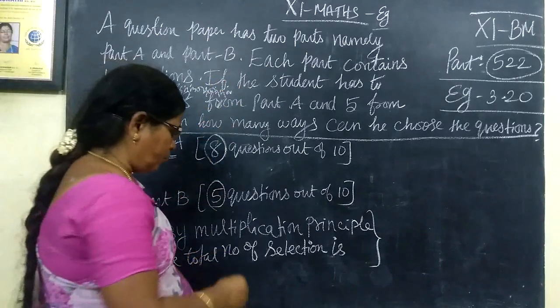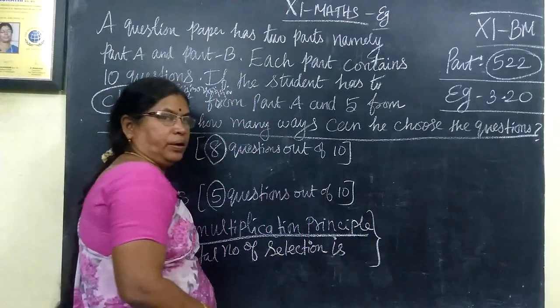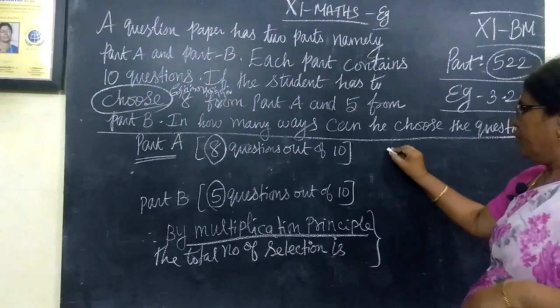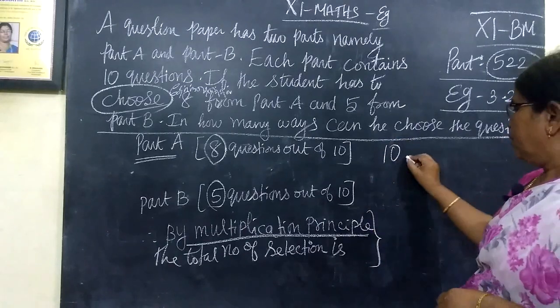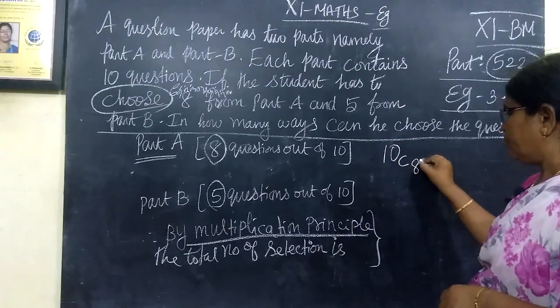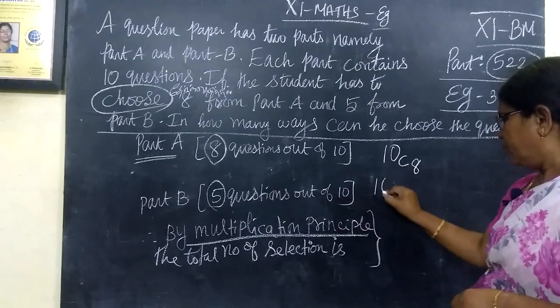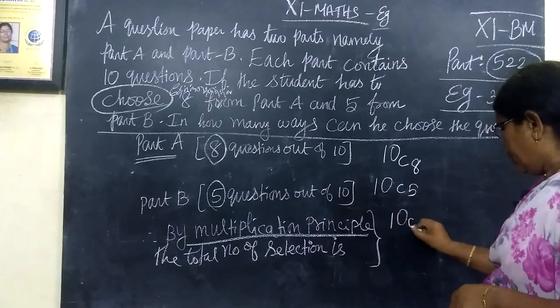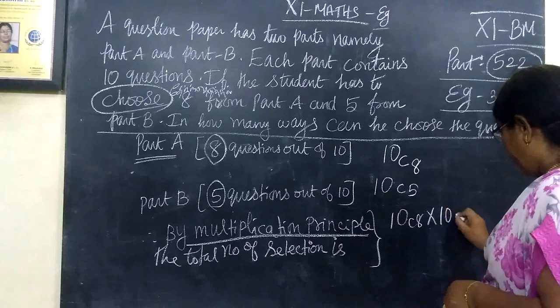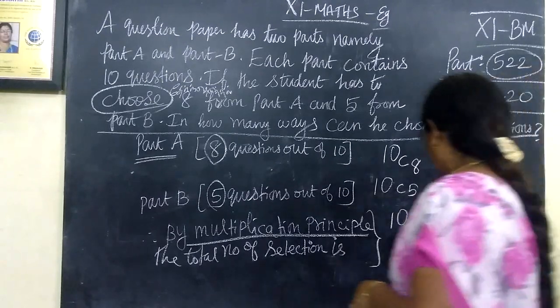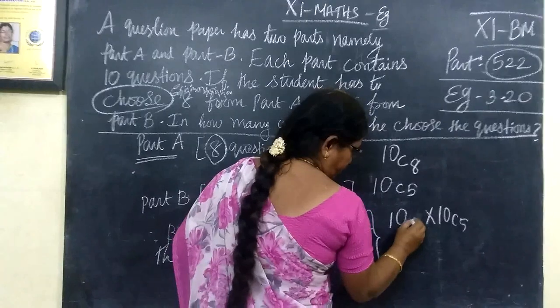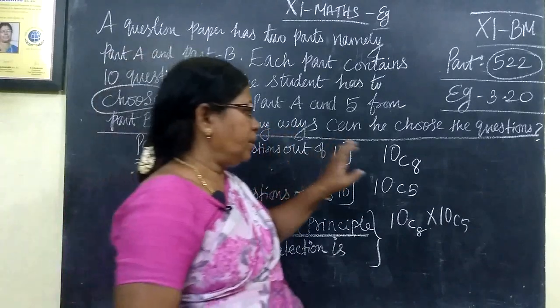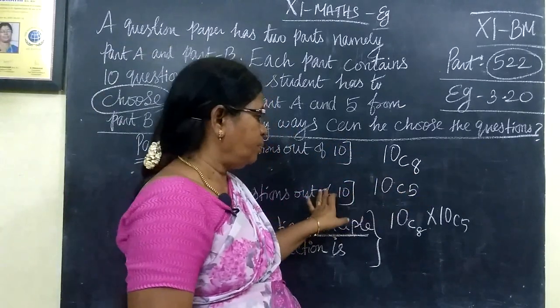Why are we using the multiplication principle? We are using combination. In Part A, 8 questions need to be chosen, and in Part B, 5 questions.